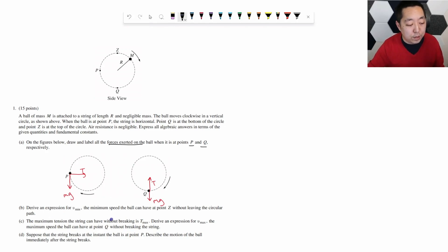Part b, derive an expression for vmin, the minimum speed the ball can have at point z without leaving the circular path. So we want to know something about here. We're going to draw a free body diagram at point z. And what are all the forces? We have gravity acting downward. And then at the top here, the rope is like this, so it's pulling downward. Now, what do we do after we draw a free body diagram? After the free body diagram, the next step is f net equals ma. We have to know which way the acceleration is. At the very top of the circle, it's moving in a circle, so there's acceleration directed towards the center of the circle. That's called the centripetal acceleration. And we have two forces in the same direction. So the net force is going to be mg plus the tension equals m times the acceleration, which in this case is centripetal acceleration. So I replace it with v squared over r, where r is the radius of the circle.